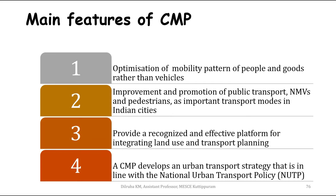The main features of CMP include: first, optimization of mobility of people and goods rather than vehicles — the main focus is on people. Second, improvement and promotion of public transport, non-motor vehicles, and pedestrians as important transport modes. Walking, cycling, and public transport are the most sustainable modes, so their improvement and promotion is a key feature of CMP.